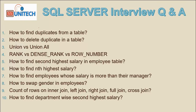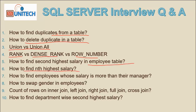The first question is how we can find duplicates from a table. Next, how we can delete duplicates. Then, the difference between UNION and UNION ALL. Next, the difference between RANK, DENSE_RANK, and ROW_NUMBER. Then, how to find the second highest salary, the nth highest salary, the employee whose salary is more than their manager, how to swap gender in the employee table, the row count for inner join, left outer join, right outer join, full outer join, and cross join, and finally, how to find the department-wise second highest salary.